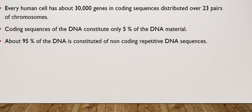First of all, as we all know, every human cell usually consists of 30,000 genes in sequences known as coding sequences. This term refers to the sequences that code for specific proteins which represent specific traits. Usually, these 30,000 genes are distributed over 23 pairs of chromosomes, which constitute the 46 chromosomes that we as human beings have. The coding sequences of the DNA constitute usually only 5% of the DNA material.